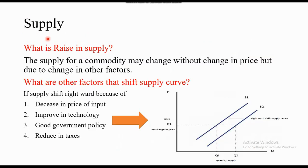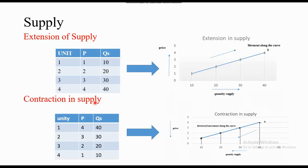When there is a rise in supply, the supply curve is shifted. S1 is your original supply curve. When supply rises due to other factors, the supply curve shifts to the right — from S1 to S2. This rightward shift represents an increase in supply. In extension and contraction, we move along the supply curve, but in rise and fall, the supply curve itself shifts.